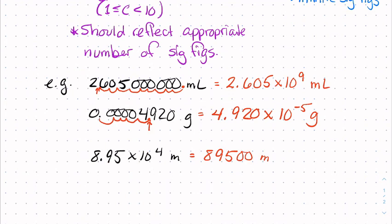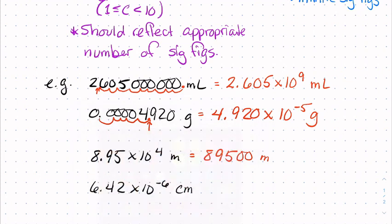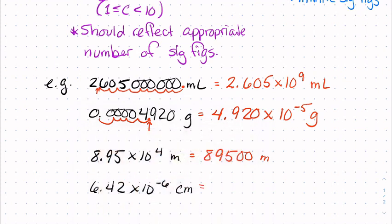You can also do one going in the other direction. If we have, let's say, 6.42 times 10 to the negative 6th centimeters. Negative exponent is going to make my number smaller. If I'm taking 6.42 and multiplying it by 10 to the negative 6th, it is going to get smaller by six orders of magnitude. I'm going to be moving my decimal point in the direction that makes the number smaller, which is to the left.